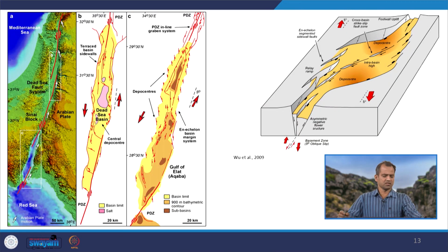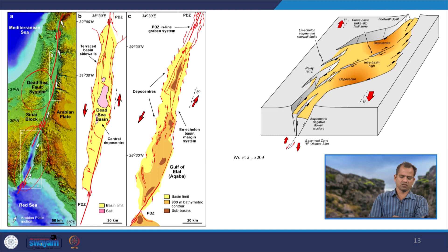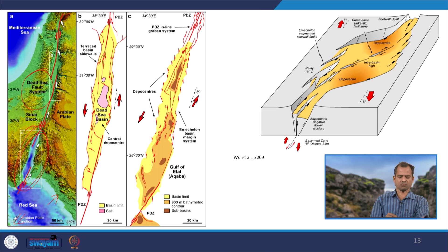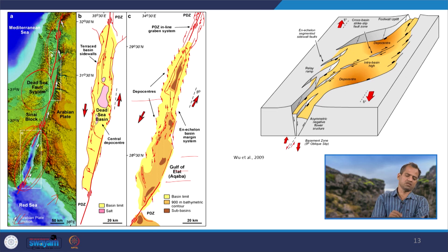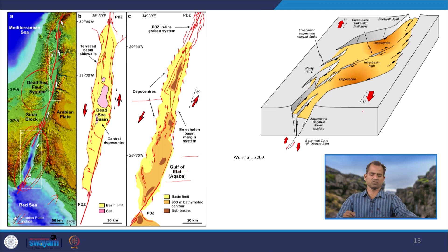Here we can see the Dead Sea sequence — along the Dead Sea fault, on one side is the Red Sea representing a divergent system, and on the other side is the strike-slip or transform system where we get the Dead Sea deposits. Another basin is the Gulf of Aqaba. Two basins have been exemplified here and the mechanism — oblique spreading with a rotational fault system — is shown.